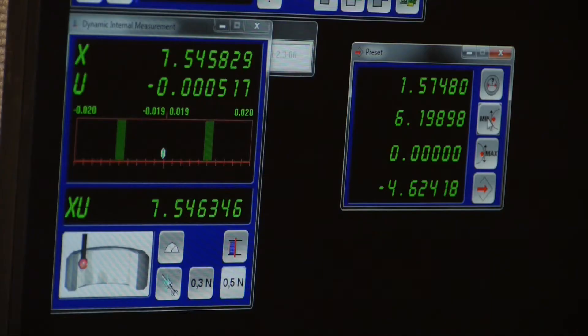We'll bring that into contact here. Get close with the coarse adjustment, lock that, and then tune it in using the fine adjust. Once we have a green check mark on the right side, we can lock in the max measurement.